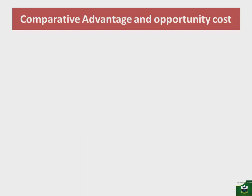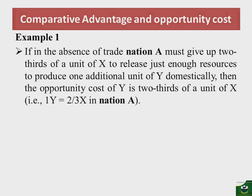Let's take a look at an example. If, in the absence of trade, nation A gives up two-thirds of a unit of X to release just enough resources to produce one additional unit of Y domestically, then the opportunity cost of Y is two-thirds of a unit of X in nation A — that is, the opportunity cost of Y equals 2/3 X in nation A.